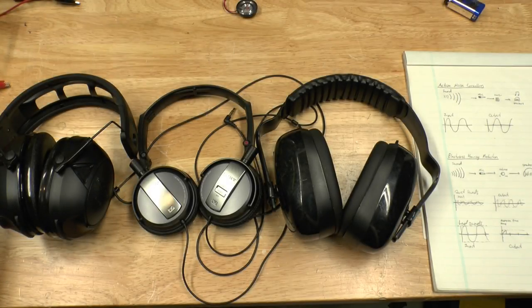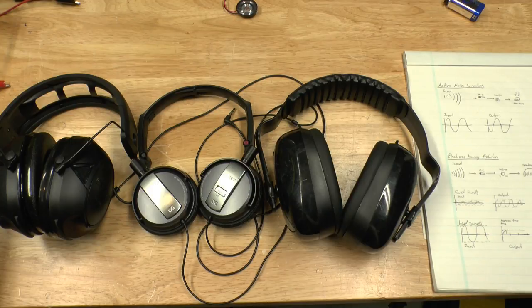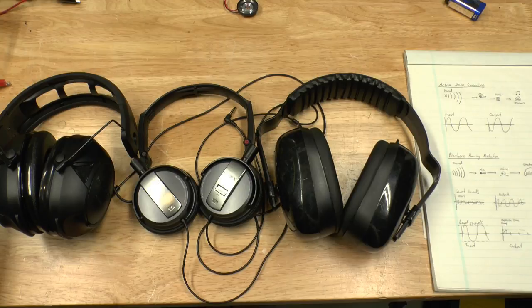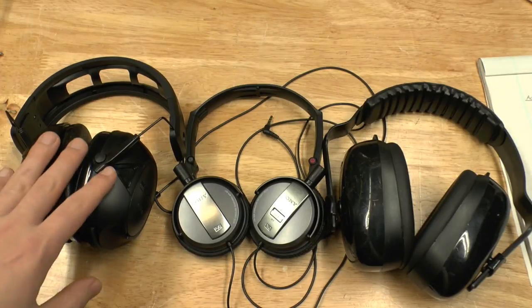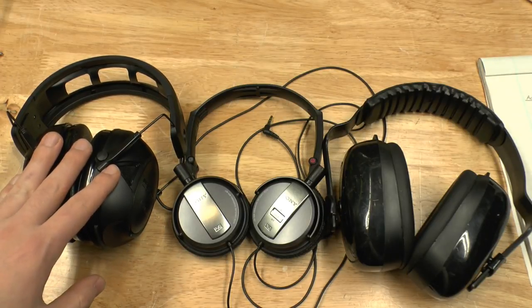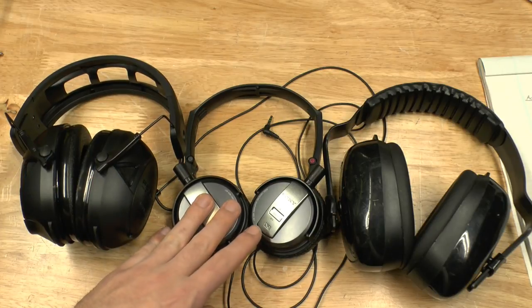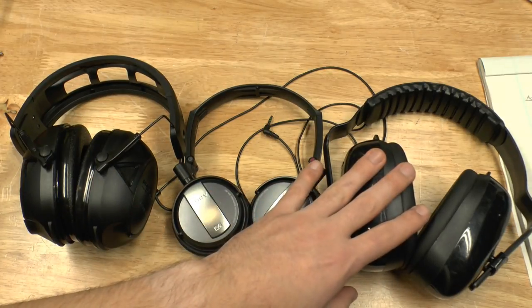There seems to be a lot of confusion on what electronic hearing protection is and how it's different from noise cancelling headphones. People seem to think they're the same thing, so in this video I'm going to show how they work and what the differences are. Here we have three different types of headphones. This is electronic hearing protection, these are noise cancelling headphones, and these are just regular earmuffs.